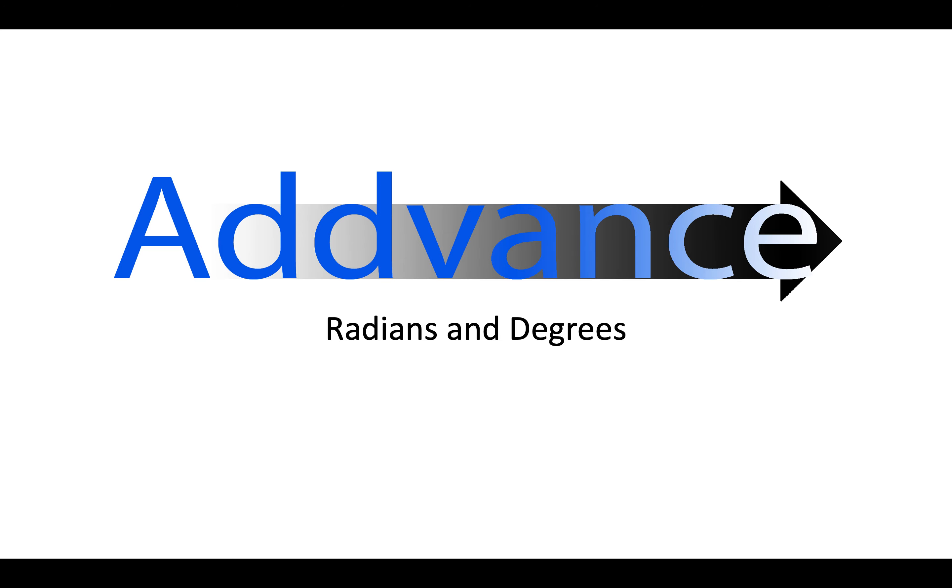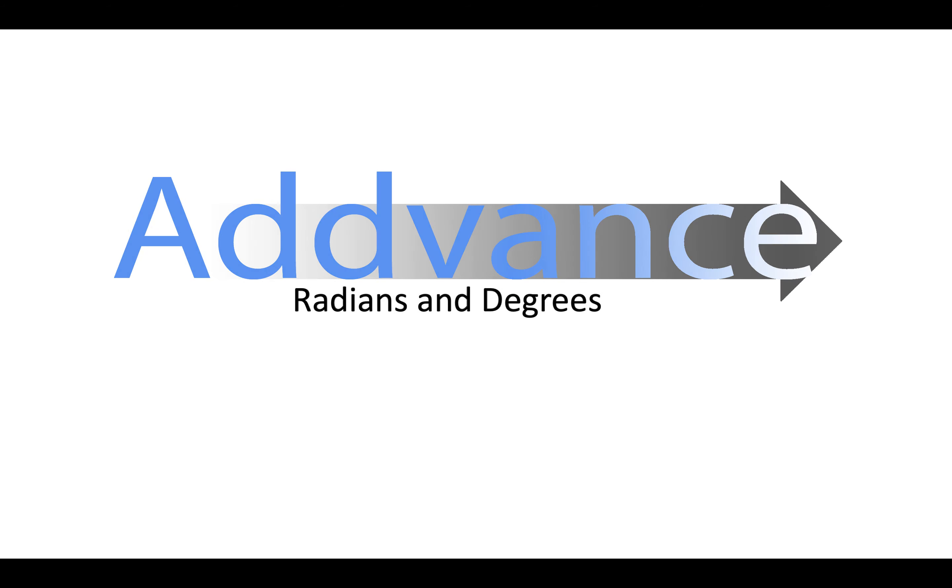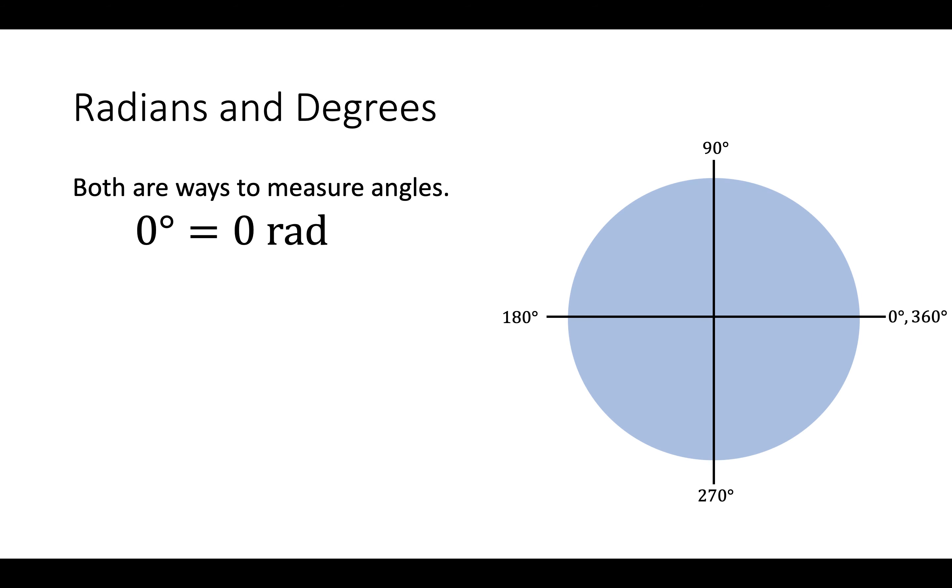Welcome back everybody. Today we're looking at radians and degrees. Radians and degrees are two ways of measuring angles. You're probably familiar with degrees already, and today we're going to try and figure out what radians are about.